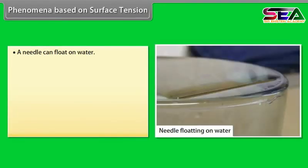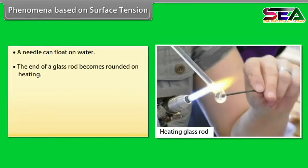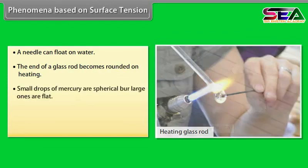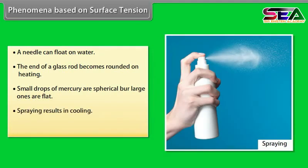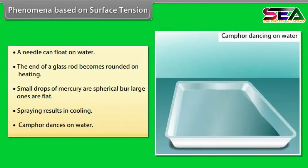Phenomena based on surface tension: A needle can float on water. The end of a glass rod becomes rounded on heating. Small drops of mercury are spherical but large ones are flat. Spraying results in cooling. Camphor dances on water.